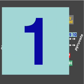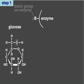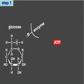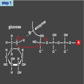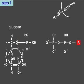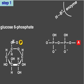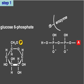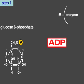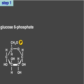In the first step, the enzyme hexokinase uses ATP to phosphorylate glucose. This investment of energy primes glucose for energy-releasing reactions later in glycolysis. The resulting molecule is glucose-6-phosphate. ADP is released. This first step of glycolysis is irreversible.